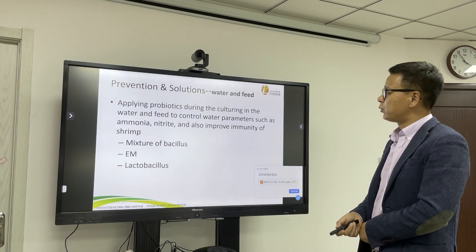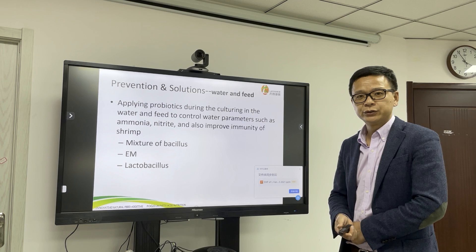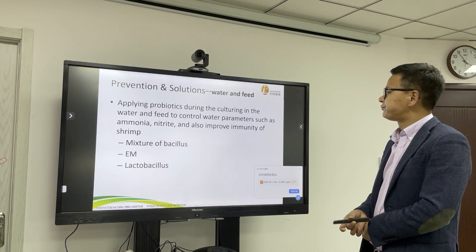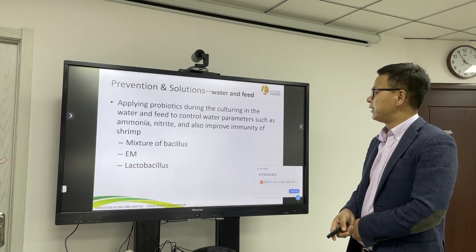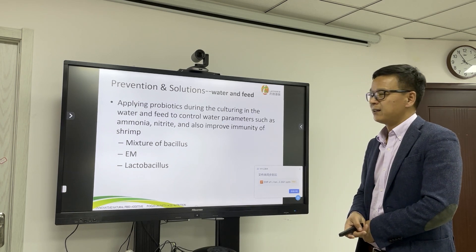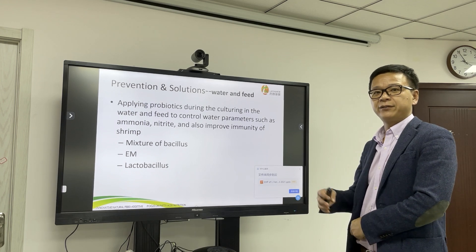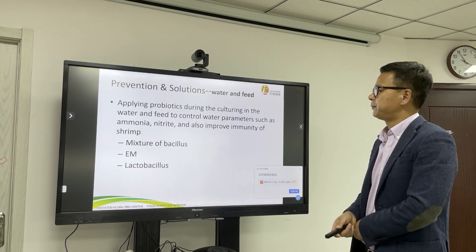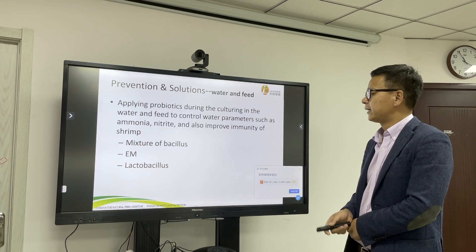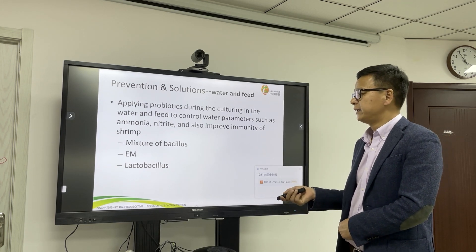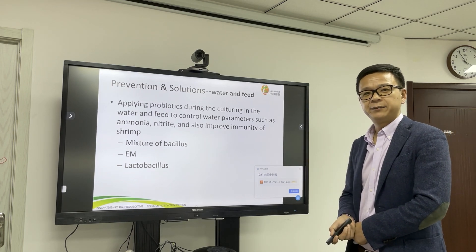For water and feed management during the culture, it is better to use probiotics to control water parameters such as ammonia and nitrate, and also to improve the immunity of the shrimp. In the market there are plenty of probiotics available from suppliers, including Bacillus, EM, and Lactobacillus. Every country has such products available from major companies.